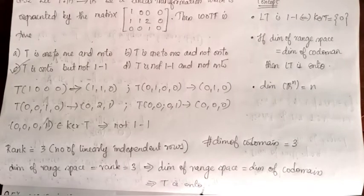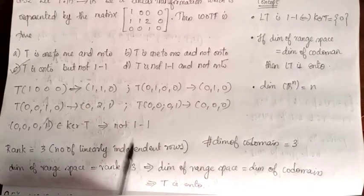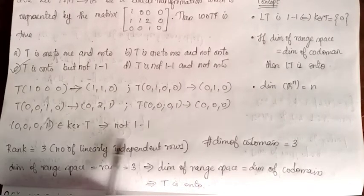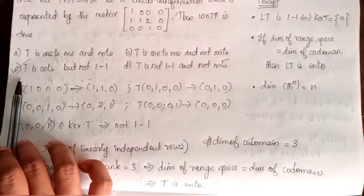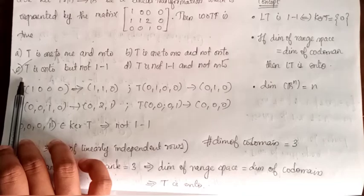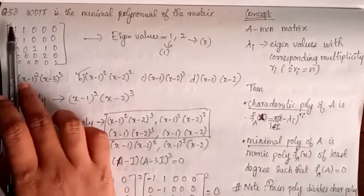Therefore T is onto. So T is onto but not one-to-one. Option C is correct.